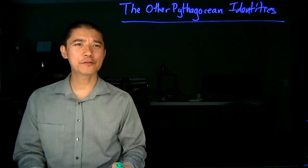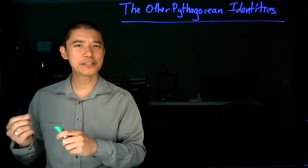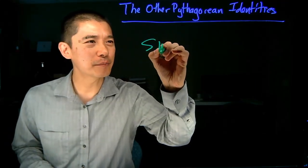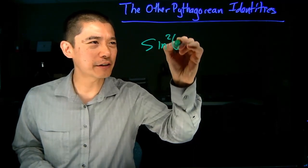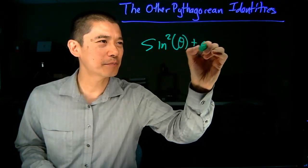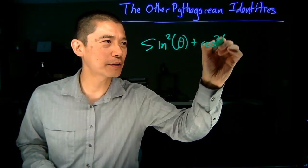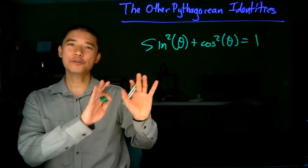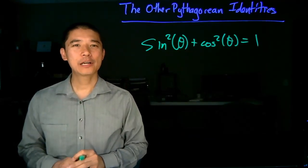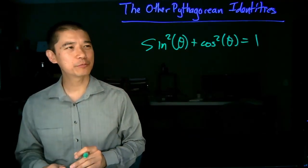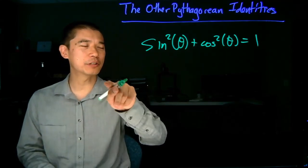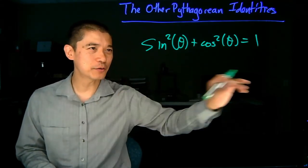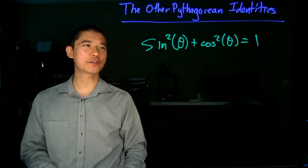It turns out with all these additional functions we get additional Pythagorean identities. The basic Pythagorean identity is sine squared theta plus cosine squared theta equals 1. We're going to use this to derive two more by dividing the whole thing by sine squared theta and then by cosine squared theta.